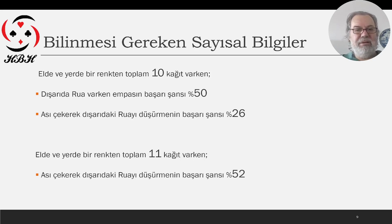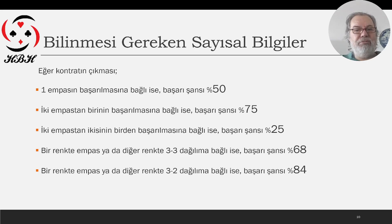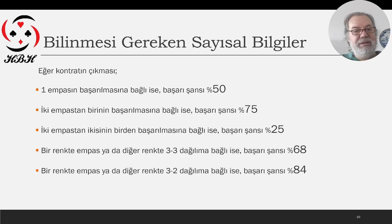Kısaca buradaki bilgileri özetlemiş oluyorum. Kontratın en paslarla ilgili bilgilerden bahsetmiştik. Bir en pasın başarılmasına bağlıysa başarı şansı yüzde elli. İki en pastan birinin başarılma şansı yüzde yetmiş beş. Nereden geliyor bu yüzde yetmiş beş? Yüzde elli ihtimalle birinci en pas deniriz; başaramazsak bu kalan yüzde elli demek. O kalanın da yüzde ellisi — yani yirmi beş — ikinci en pasın başarı şansı. Yani ikisinden birinin tutma ihtimali yüzde yetmiş beş. Ama ikisinin de tutma ihtimali ise yüzde yirmi beşe iniyor.